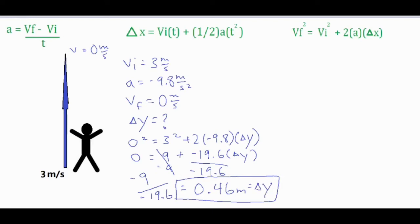I plugged in everything into my third formula. We have 0 squared equals 3 squared plus 2 times negative 9.8 times the delta y. 0 squared becomes 0, 3 squared becomes 9, and then the 2 times negative 9.8 gives the delta y a coefficient of negative 19.6. So I subtracted the 9 from both sides, which sent the negative 9 to the other side of the equation, then finished off by dividing both sides by negative 19.6 to get a final answer of 0.46 meters as my delta y.